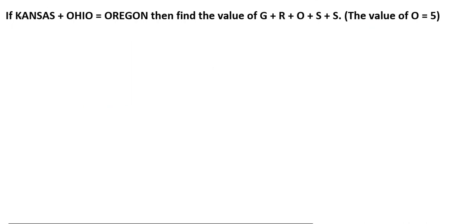Here, KANSAS plus OHIO equals ORIGIN. Find the value of GRASS. The value of O is equal to 5 — you are already given. You will apply O as 5 directly, find the other values, and then find the sum of G, R, O, S, S.